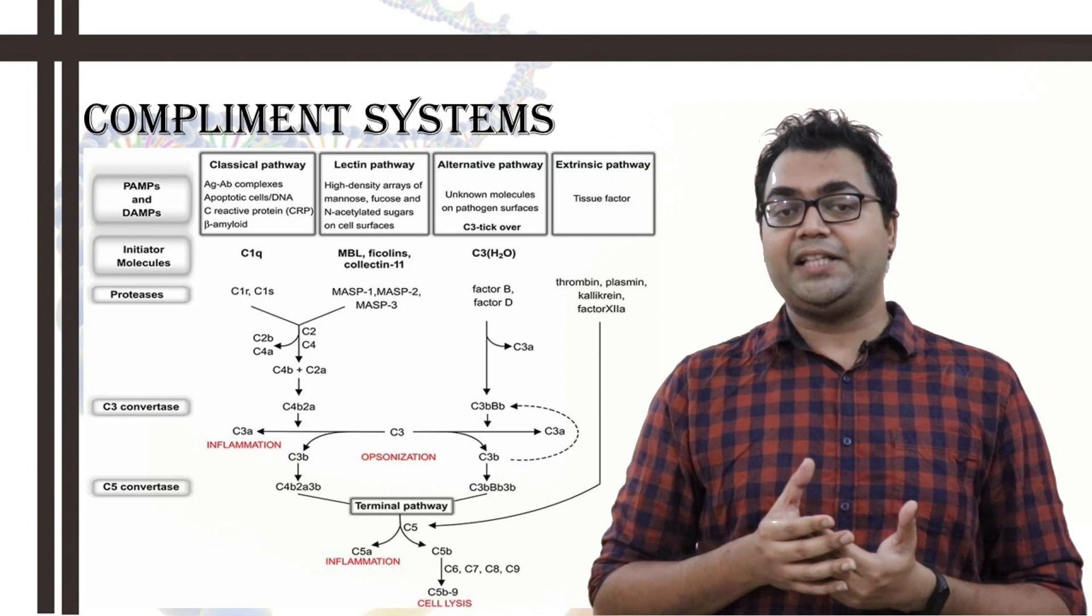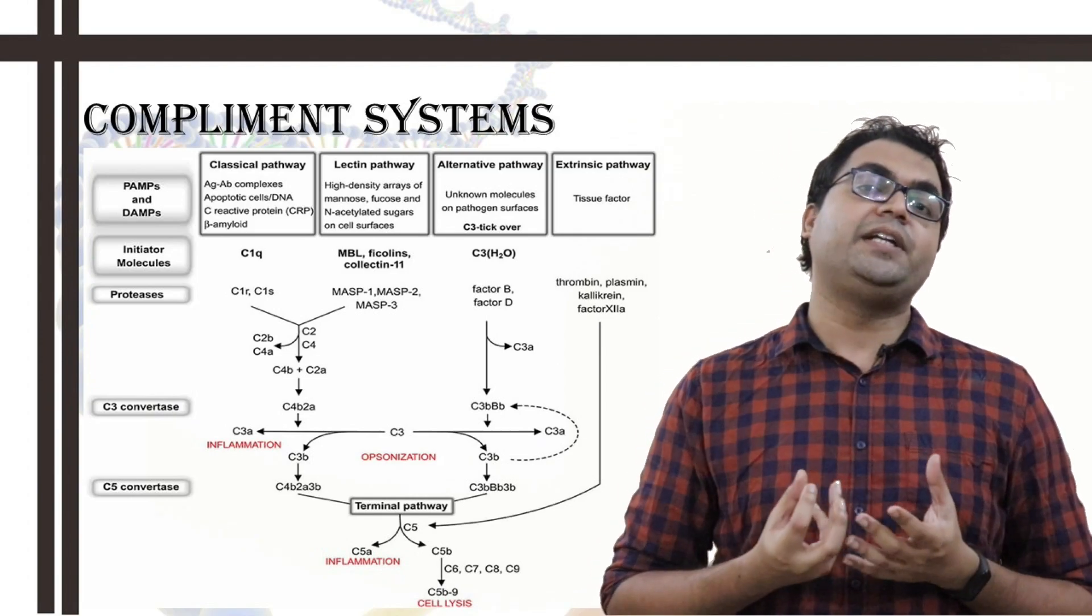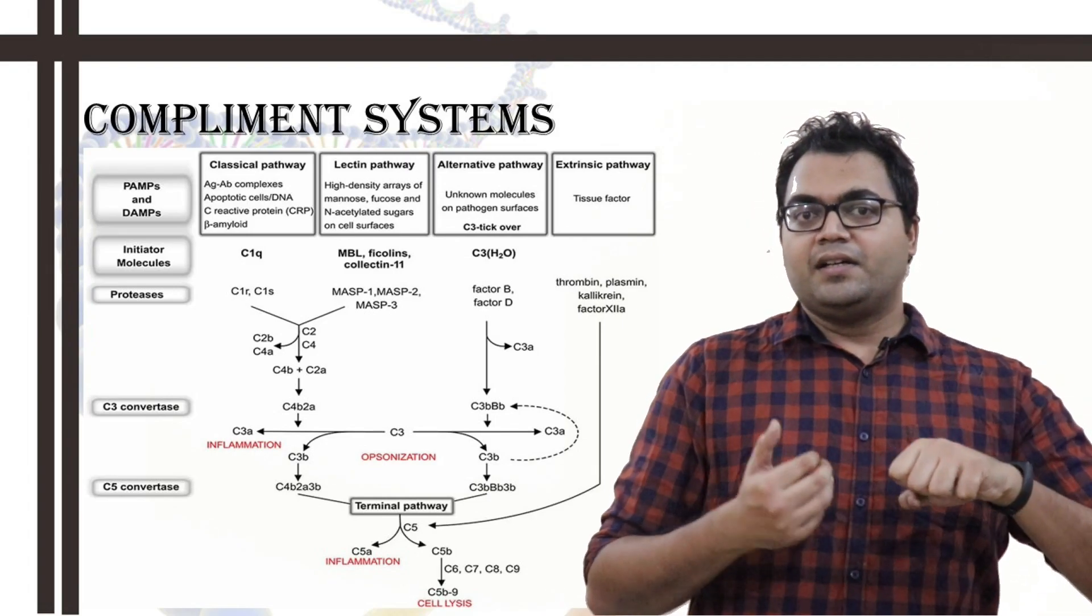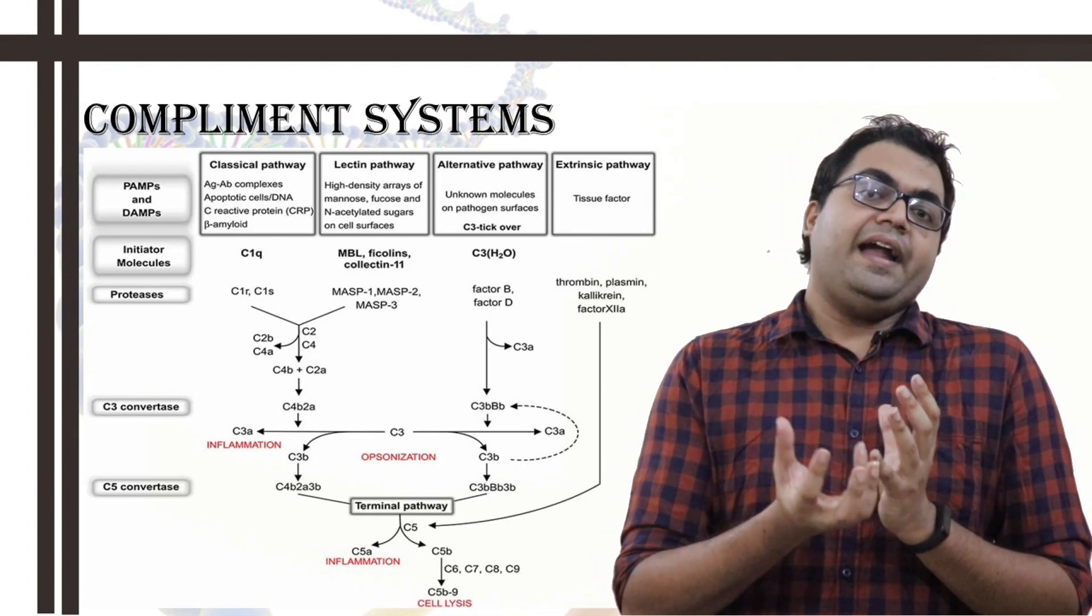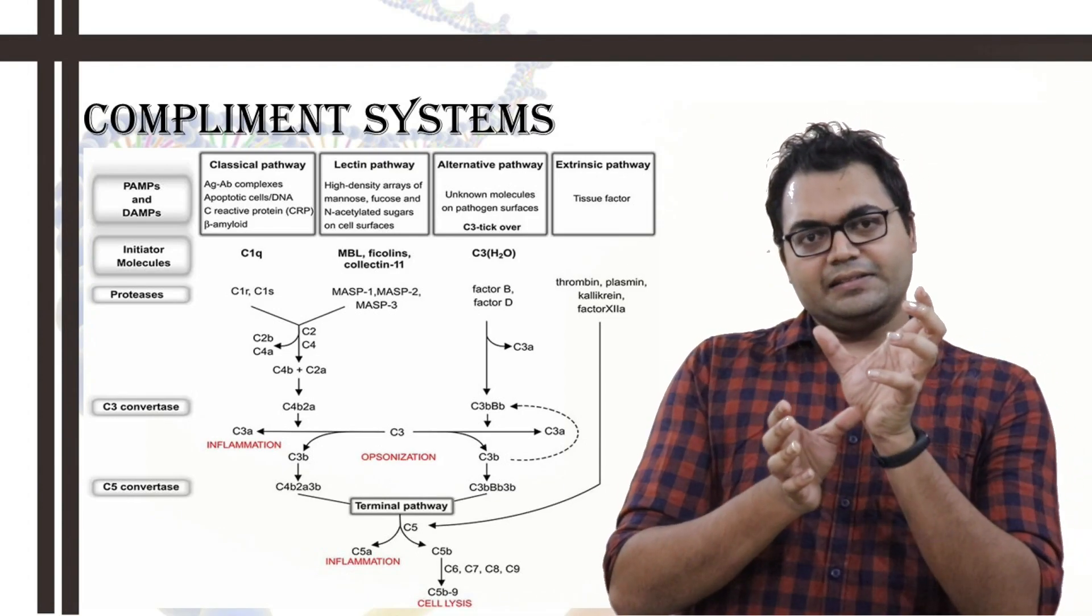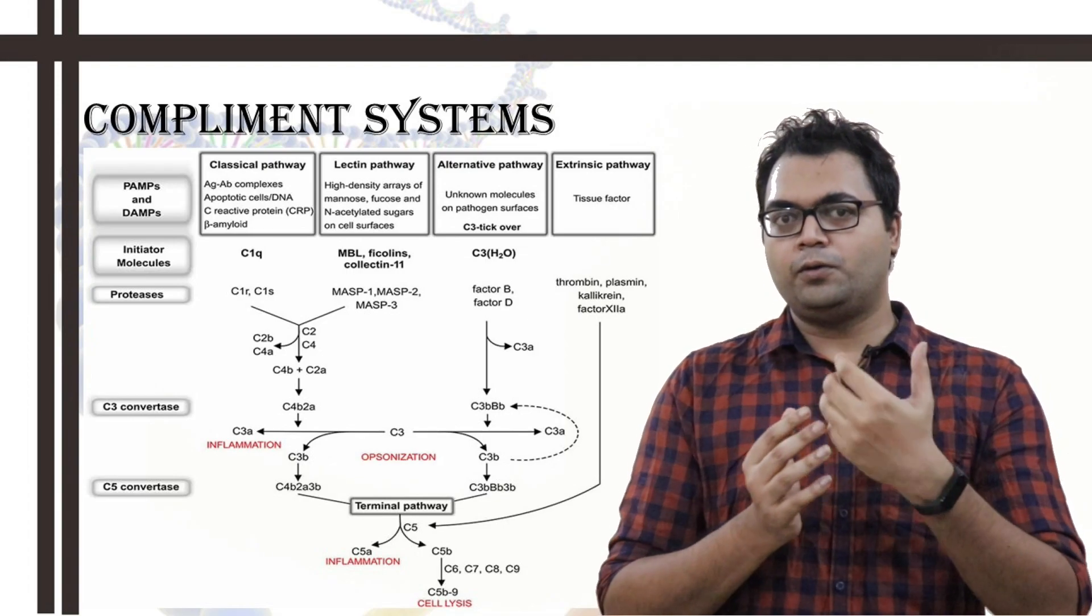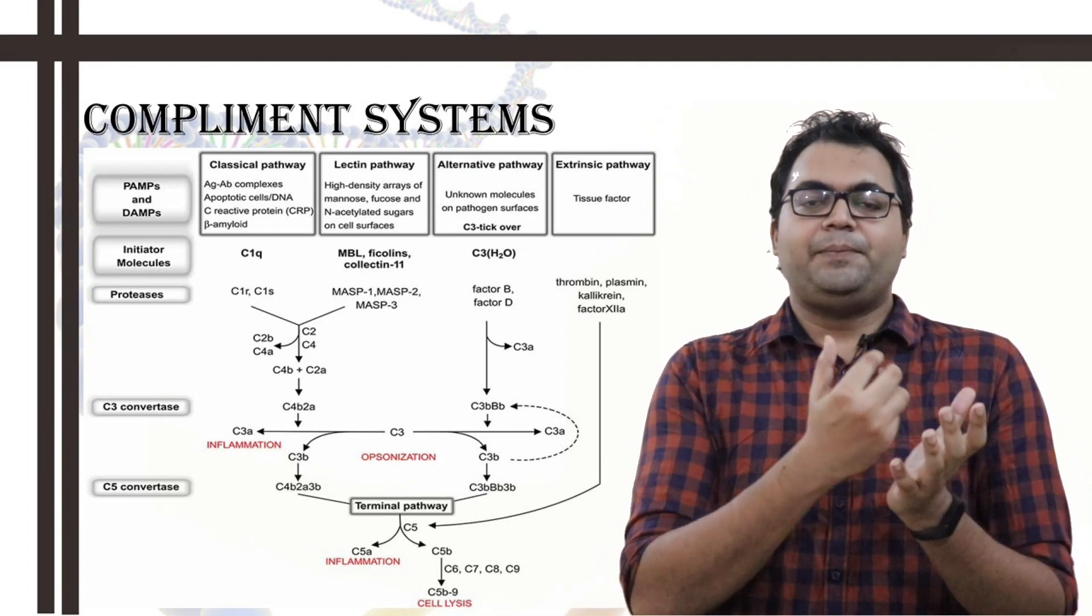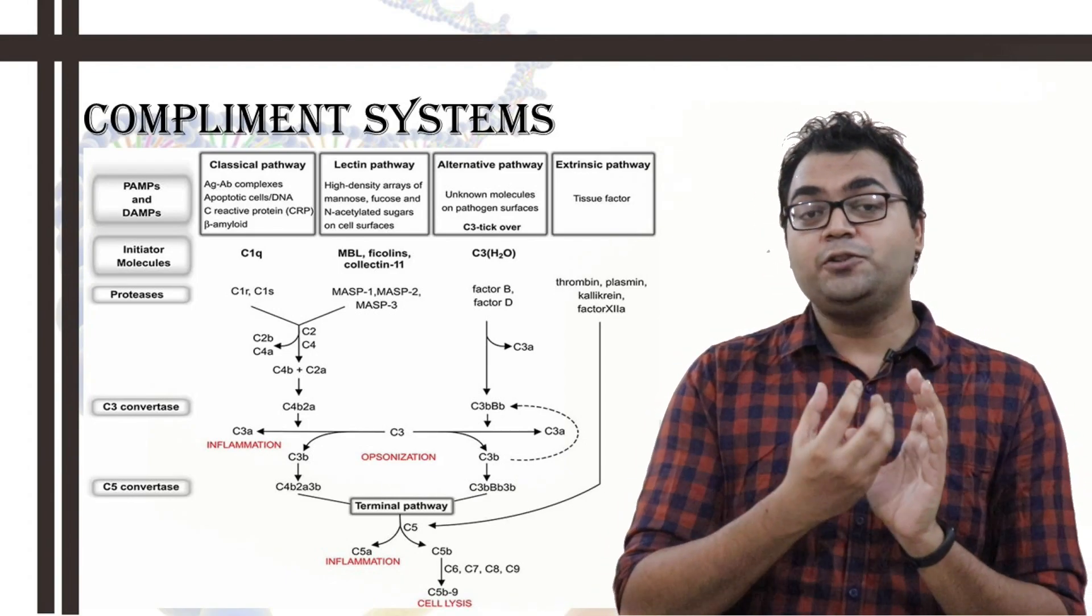All in the alternative pathway, which is again a specific innate immunity pathway. What happens is, C3 roams around, it keeps on circulating in the bloodstream. And after circulation, it has a short half-life and some specific thioester bonds get dissociated. Auto-dissociation, you can say. Now, what happens is, it becomes C3H2O. Now, C3H2O can bind to factor B.